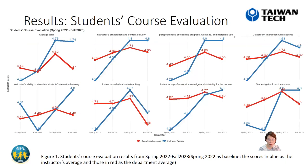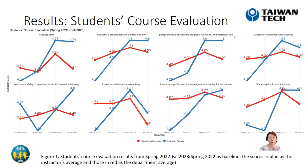This is the result of the students' course evaluation. As you can see, the red line is the department average and the blue line is the instructor's average. We use spring 2022 as the baseline before the new module implementation. As you can see, ever since the new module was implemented, students' evaluation satisfaction for this course has been improved.